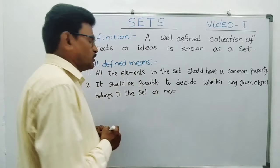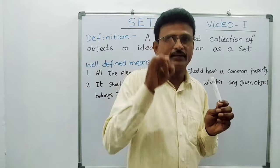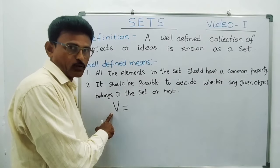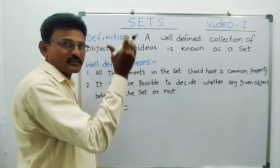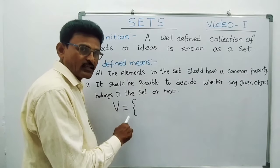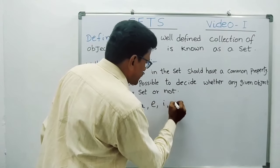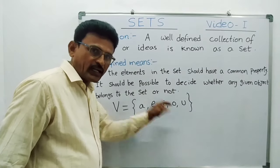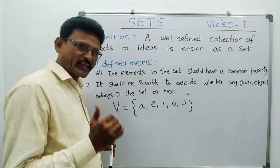With an example you can understand. We know the vowels of the alphabet: A, E, I, O, U. I am representing this set with the name V. Always sets are represented by capital alphabets. V equal to — I am writing the objects, elements — in flower brackets, also called curly brackets or braces. The elements are A, E, I, O, U. I am using only small letters. Remember: elements of the sets should be represented by using small letters only, lower case letters. Elements are separated by using commas. Here five elements belong to set V.